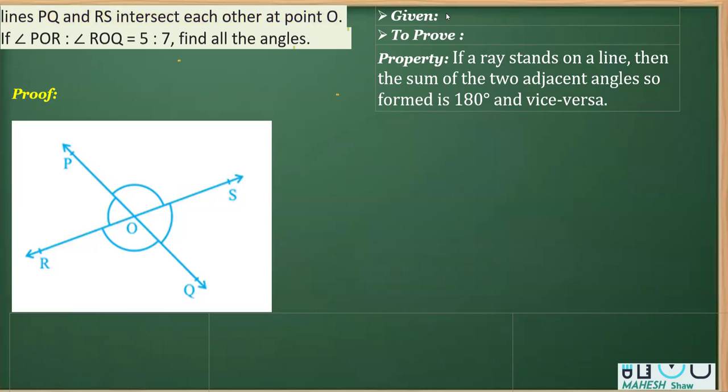We are given this ratio. As you can see, it is angle POR and angle ROQ. This is POR, and this is ROQ. The ratio is given, so what can you take?